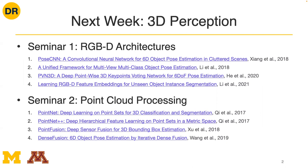PVN3D is another pose estimation paper that uses 3D key points as a voting mechanism. The fourth paper, learning RGBD feature embeddings, uses RGBD input to extract useful features as output. Those are going to be some really exciting papers - all very prominent in this area. Following that, our Thursday seminar will be on point cloud processing. Point clouds are a representation for object geometries in 3D space, and you can do a lot of interesting things with point cloud processing.